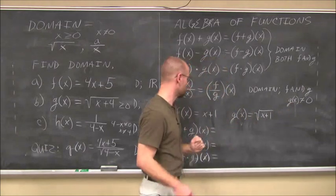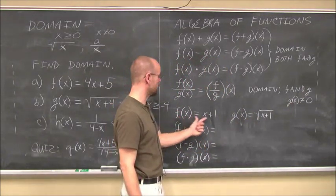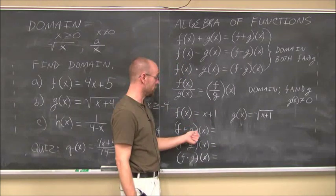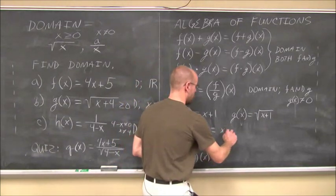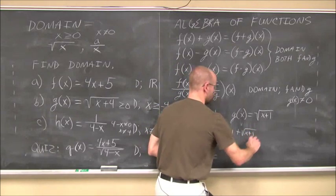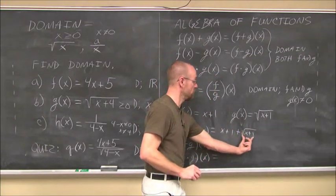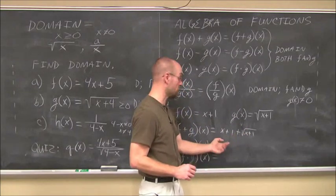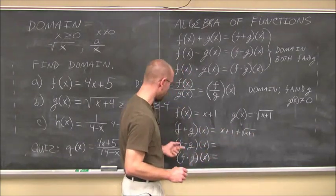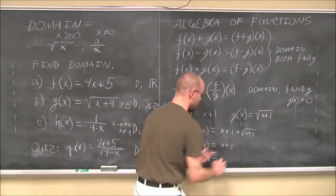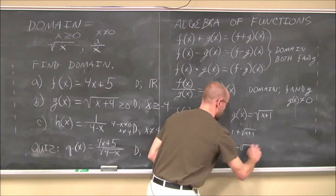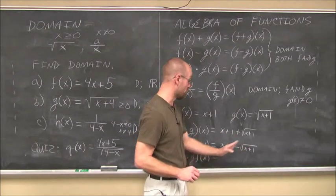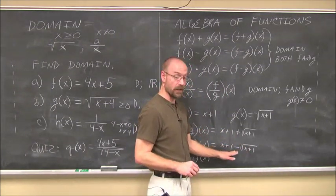Given f of x equals x plus 1 and g of x equals the square root of x plus 1, let's find (f+g)(x). That's f(x) plus g(x), which is x plus 1 plus the square root of x plus 1. There's no further simplification. For (f-g)(x), that's f(x) minus g(x): x plus 1 minus the square root of x plus 1. Because of the radical, I can't distribute the negative through, so the simplification is already done.